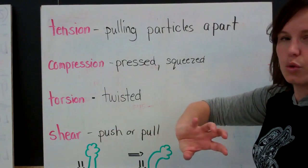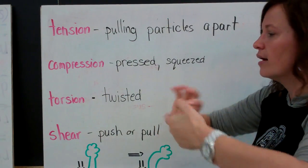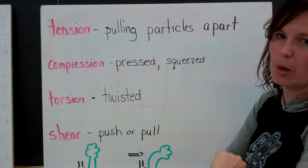Torsion is that twist. So we think about the cloths we use in class. And when we twist them to get the water out, that is a torsion. It's a twisting of the particles in an object.